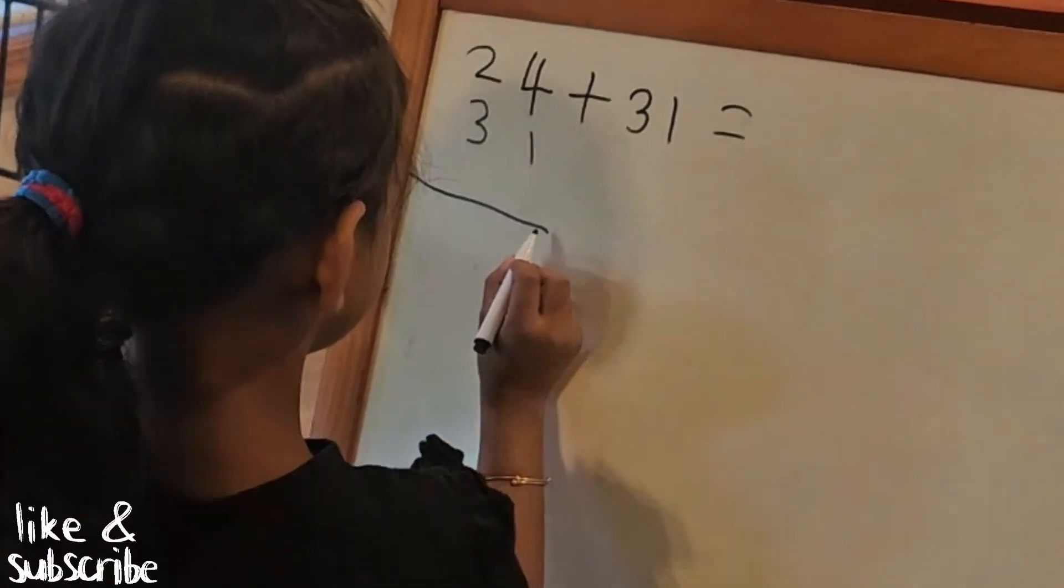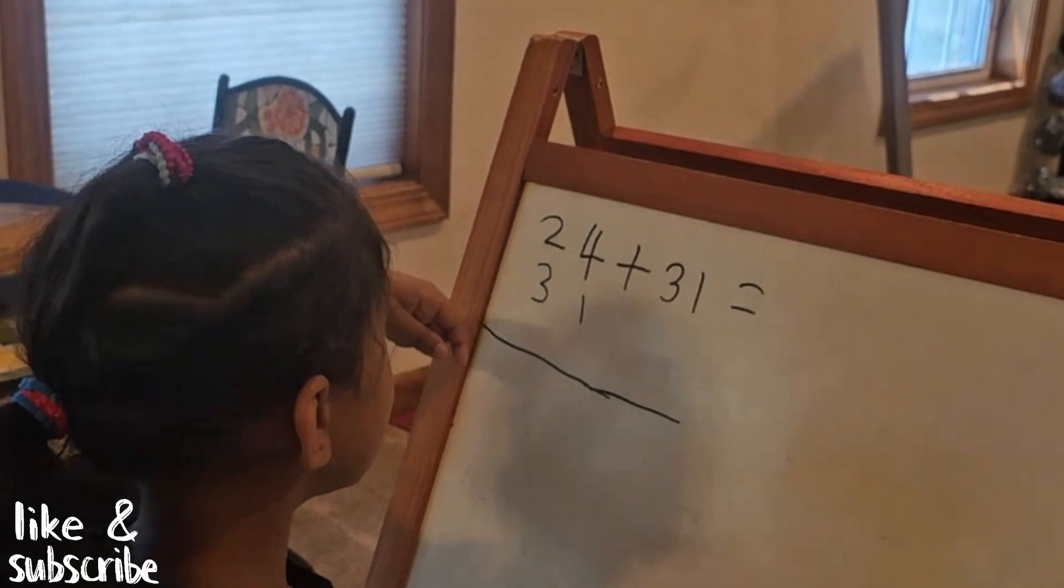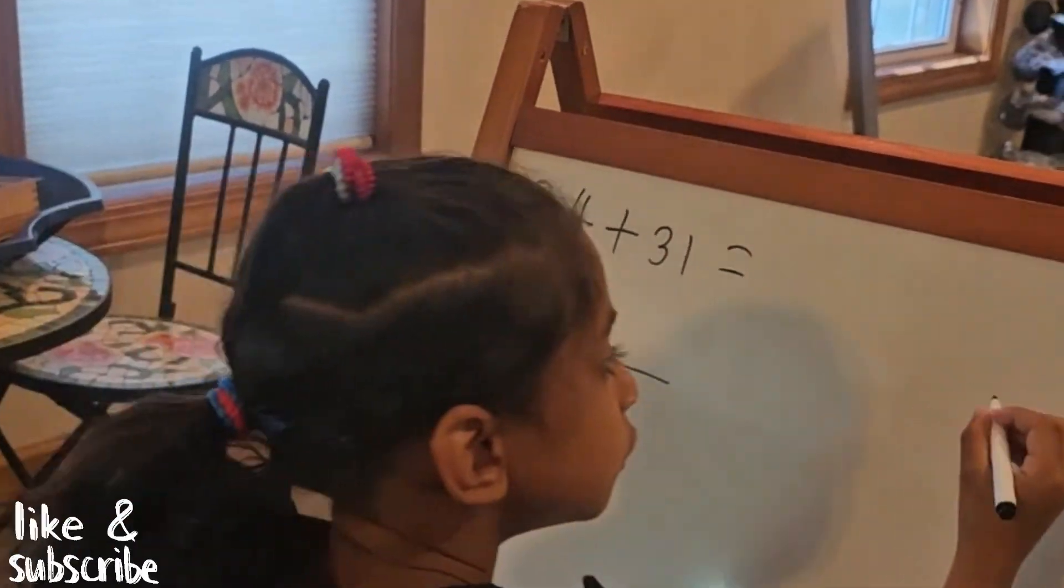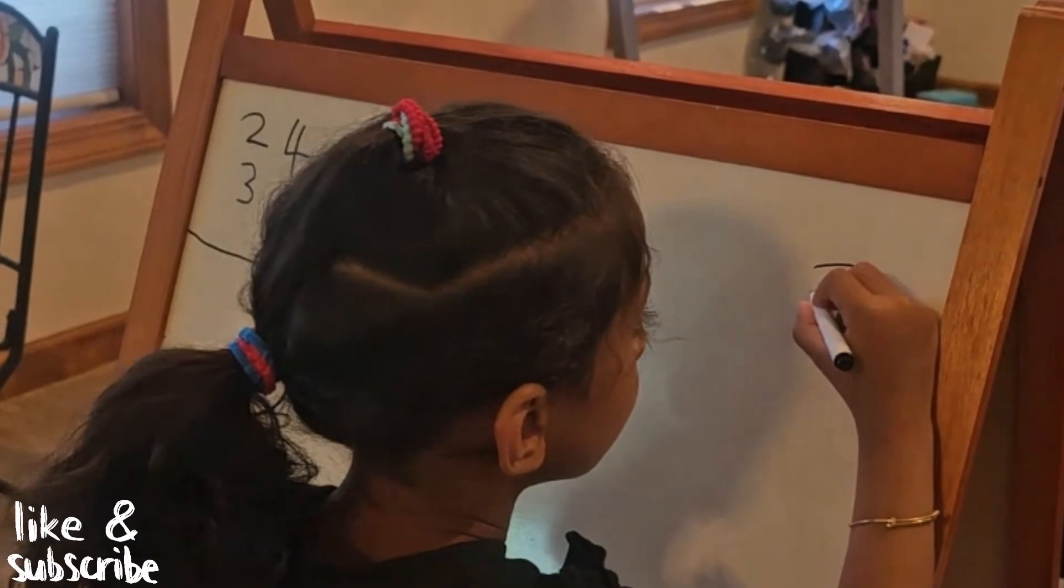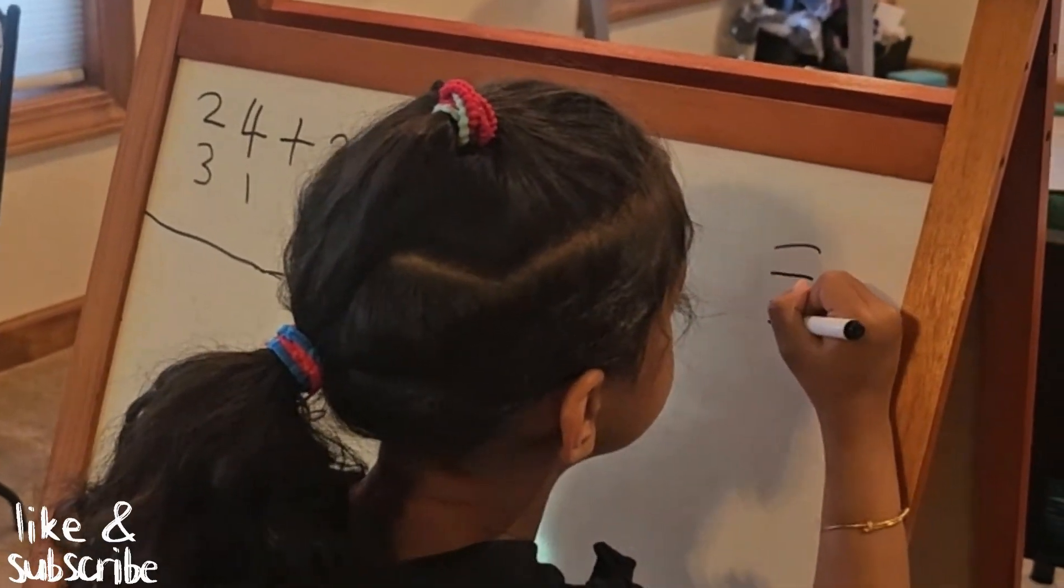And then we usually do the right first. So we're going to do like four lines. Count them one, two, three, four.